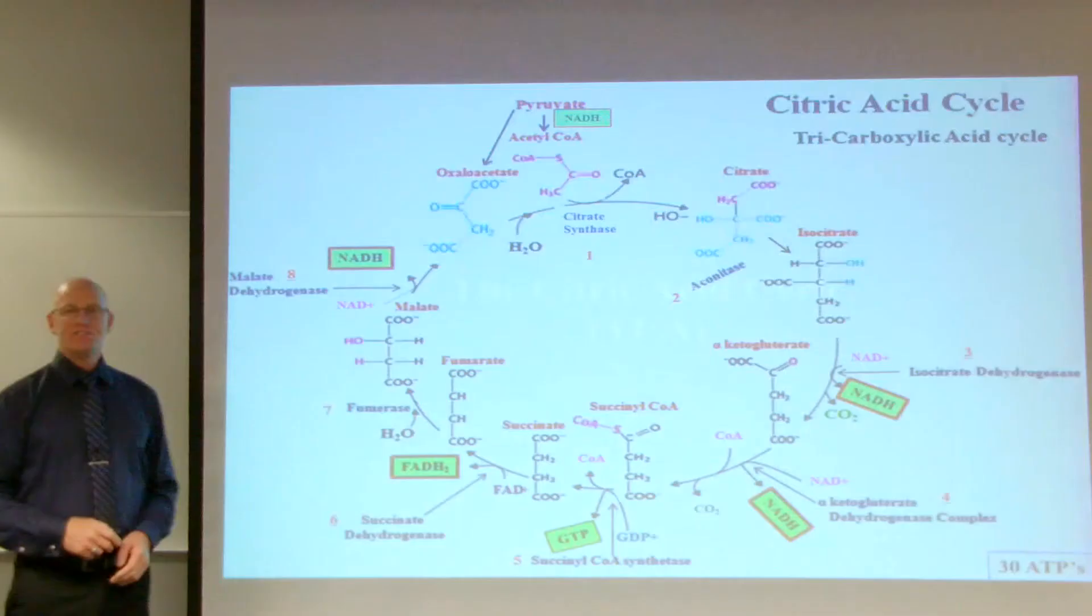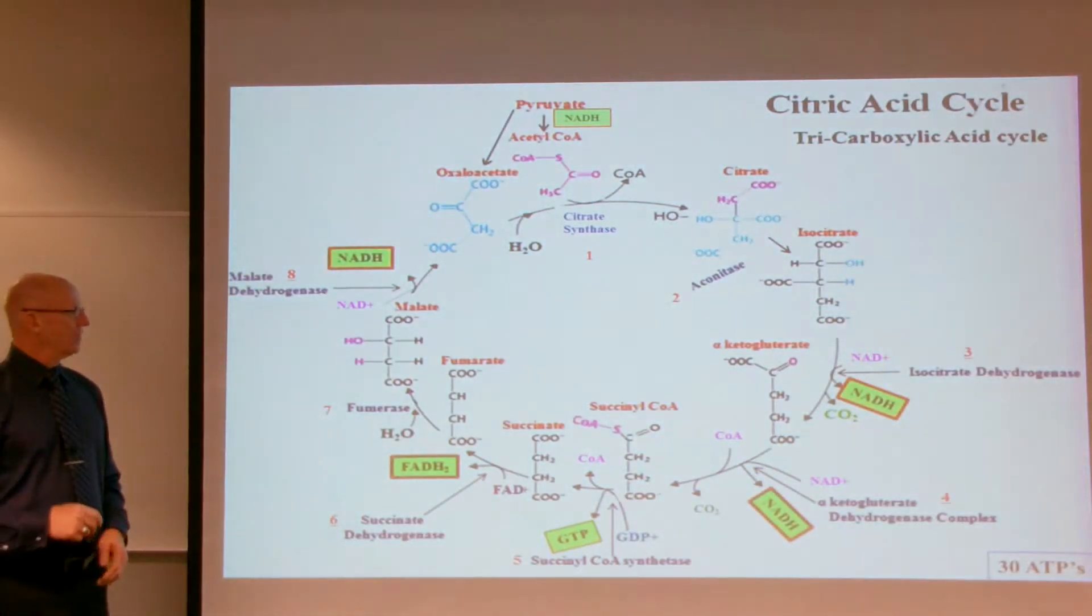The citric acid cycle. This is a graphical representation of the citric acid cycle. It is cyclic in that its 4-carbon molecule, oxaloacetate, will go through this cyclic molecular process and end up back to oxaloacetate.